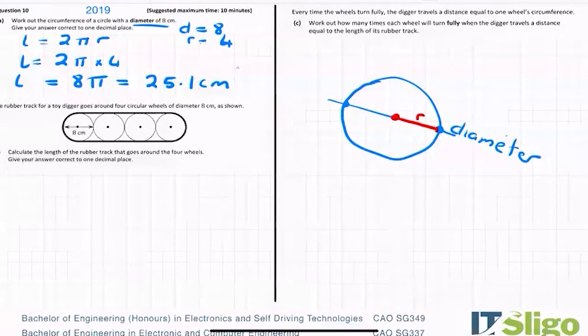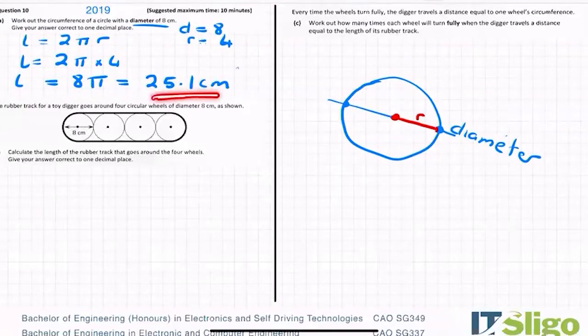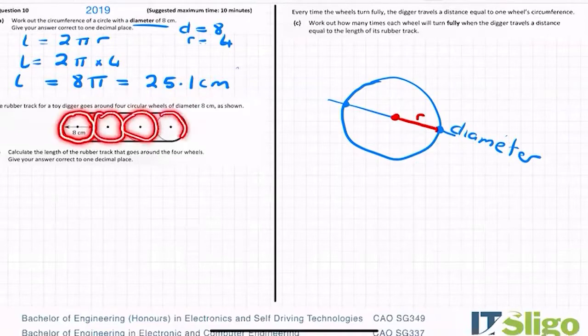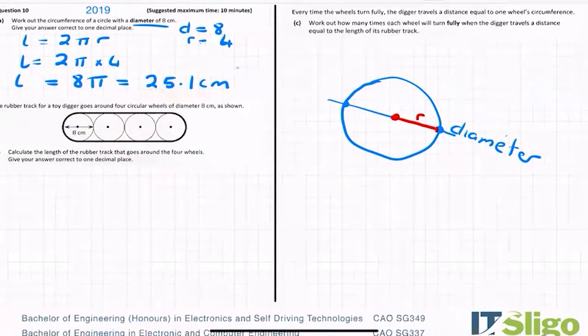Part B, then the rubber track for a toy digger goes around four circular wheels of diameter eight as shown. Calculate the length of the rubber track that goes around the four wheels. Now very easy in this one to take your 25.1 and multiply it by four for the four circular wheels. But what you've worked out is that the length of that circle there is 25.1 and this one, and of course this one and this one, because they're all the same size. So you would get 100.5 or thereabouts if you multiplied that by four.